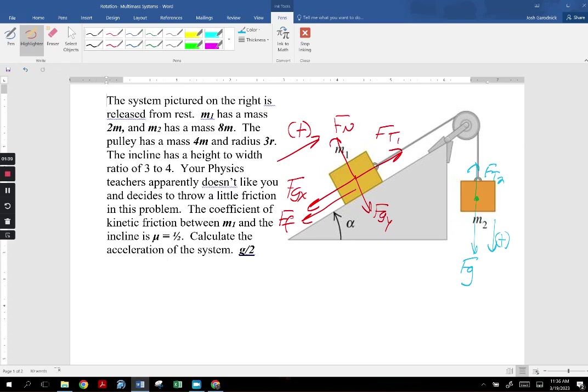And now for the FBD for the pulley. The tension in the rope is constant throughout, so if there's FT1 pulling on the mass on the incline, there's FT1 pulling on the pulley, and same thing for the hanging mass. If it's FT2 in the rope on the right, then there is FT2 pulling down on the pulley here. The pulley is going to rotate this way, so clockwise is considered positive.